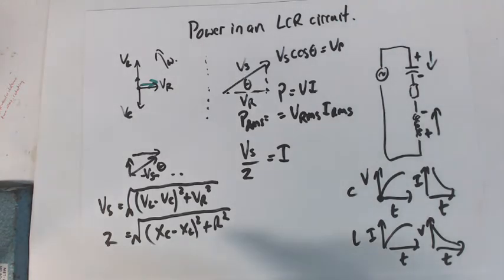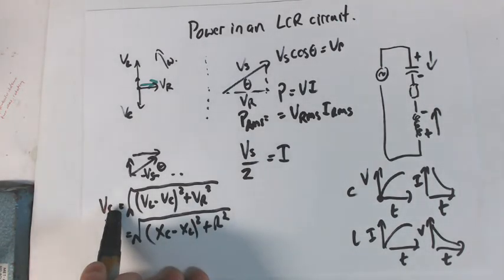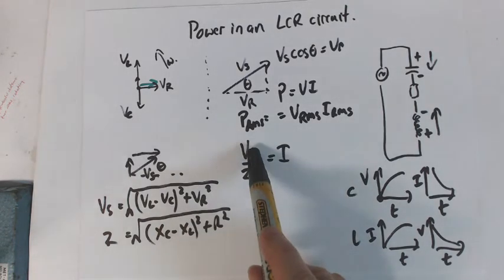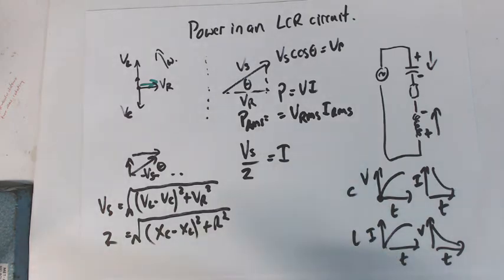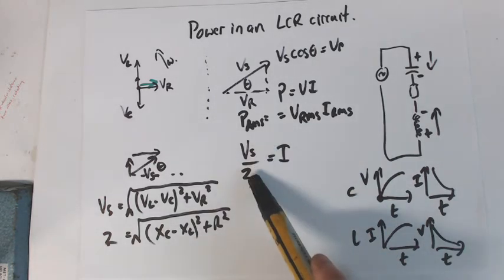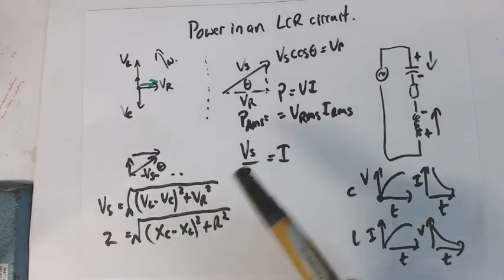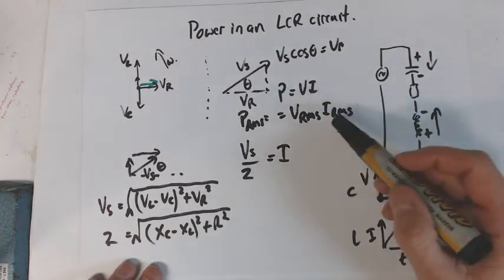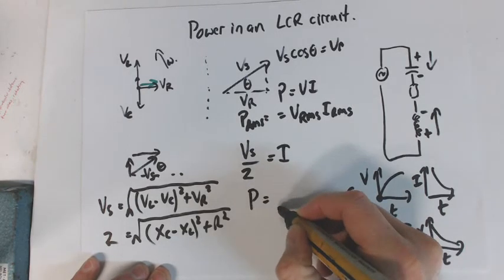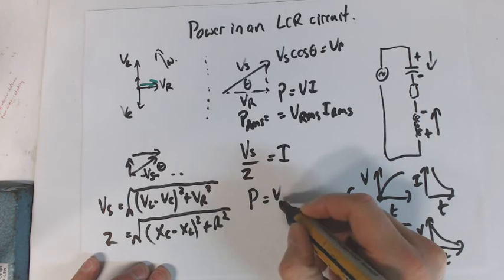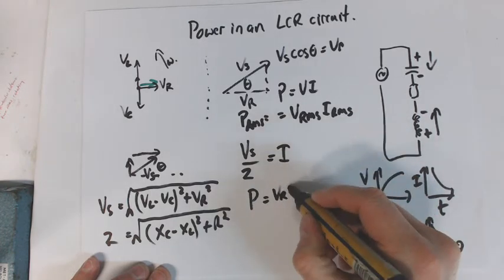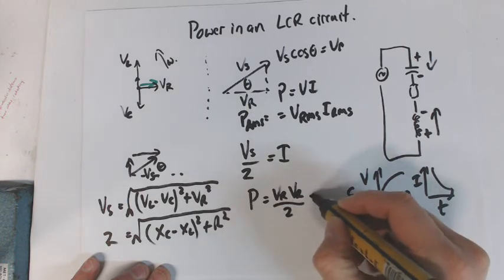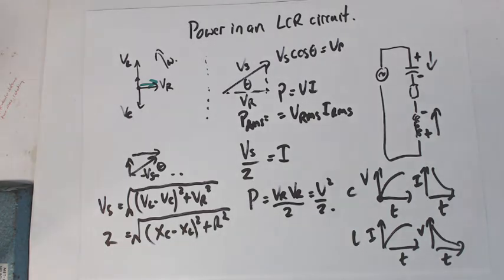Vs doesn't change, not the length of the vector. But it does change when it's positive, when it's negative, when it's zero. So we can get a Vs which is an RMS or a Vs which is a peak. Again, if we use Vs as a peak we'll get I as a peak. If we use Vs as an RMS value we'll get I as an RMS value. So there's two types of power, peak power and RMS power. So we could say power equals VRMS times I which is Vs RMS all over Z. So V squared over Z, which we're well used to. So that's power in an LCR circuit.